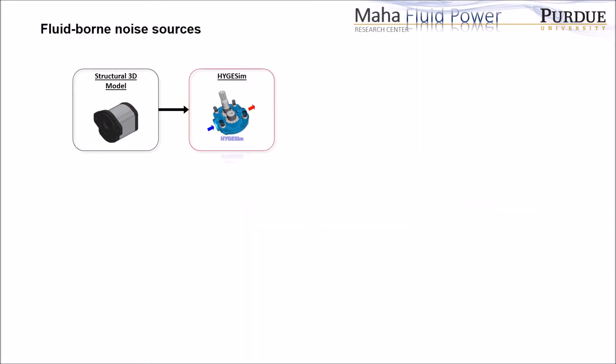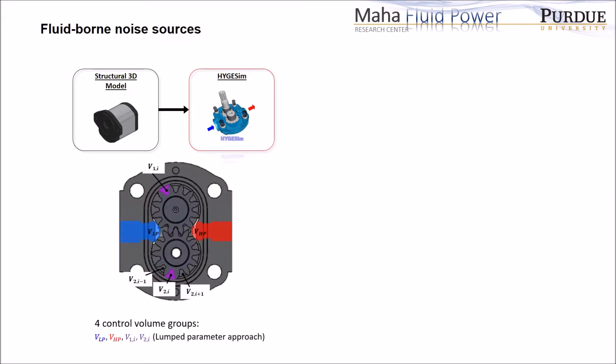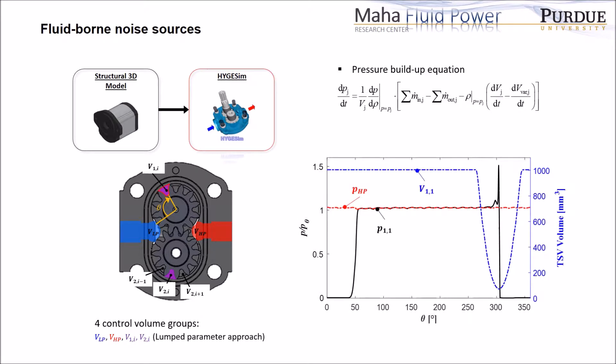For the evaluation of the fluid-borne noise sources, the simulation tool developed at the Fluid Power Research Center called HYGESim is used. There is a video for more detailed information about this tool. This tool basically considers four main control volume groups, and the pressure ripple calculation is solved. This result shows the pressure and working volume inside a particular tooth-space volume. From this result, important features of the fluid-borne noise sources can be observed.